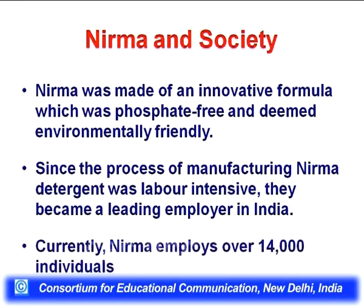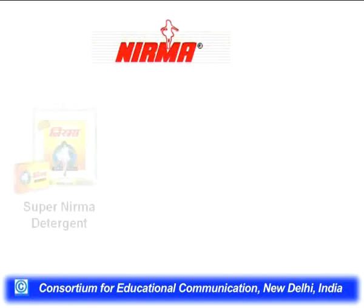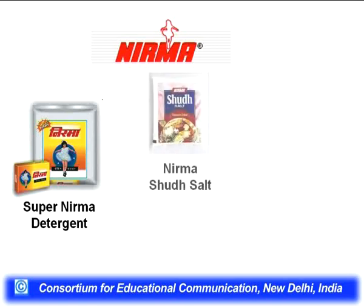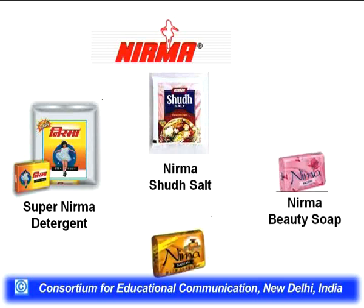Nirma's annual sales touched 800,000 tons, making it one of the largest volume sales with a single brand name in the world. Nirma was made of an innovative formula which was phosphate-free and deemed environmentally friendly. Since the manufacturing process was labor-intensive, they became a leading employer in India, currently employing over 14,000 individuals. Nirma's products include Super Nirma detergent, Nirma Shugd salt, Nirma beauty soap, and Nirma sandal.